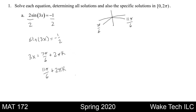Now we haven't solved for x yet — we've solved for 3x. In order to solve for x, we simply divide by 3. Notice that the denominator of the fraction gets multiplied by 3, so it becomes 18. And our 2 pi k becomes 2 pi over 3.